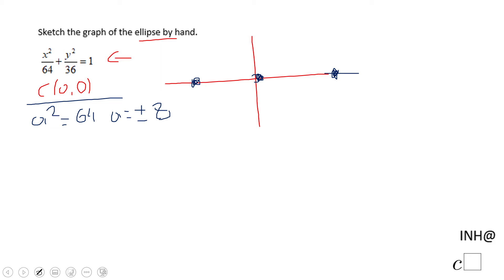Okay, and those points are obviously 8,0 and negative 8,0. But then we can go to b squared.